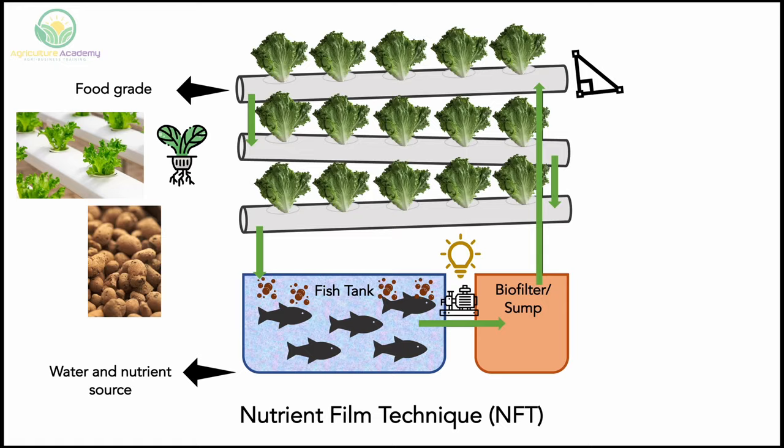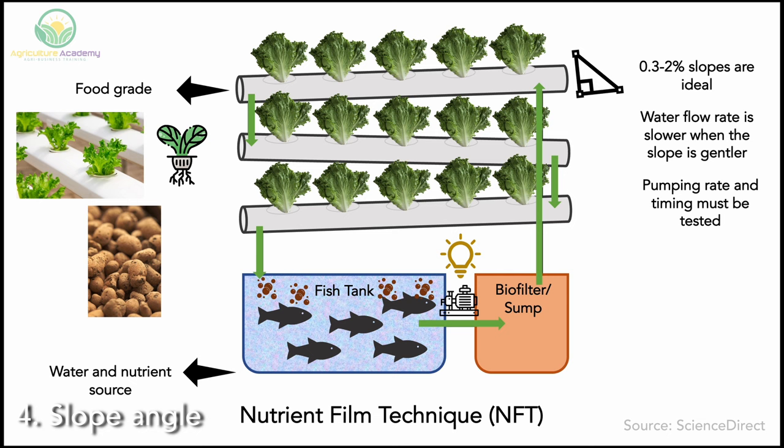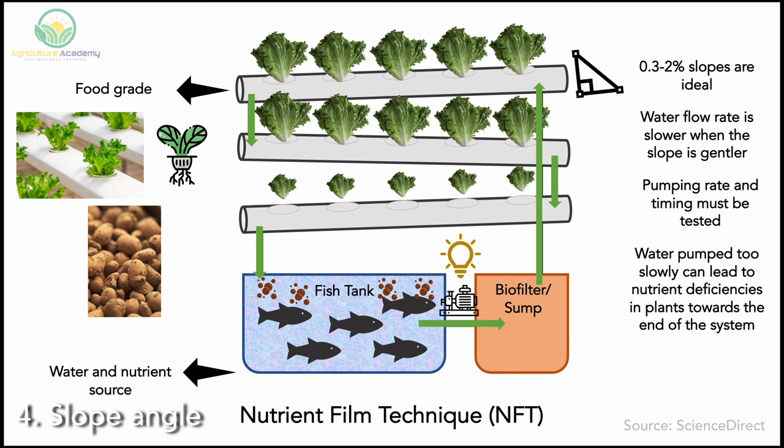Fourth, use the correct slant angle. Generally, slants between 0.3 and 2% are ideal. Remember, water will flow through gentler slopes slower. So test your pump rates and timing with the gradient of your pipe to see what suits you best. Be careful not to pump the water too slowly as this can lead to nutrient deficiencies in plants growing towards the end of the system.